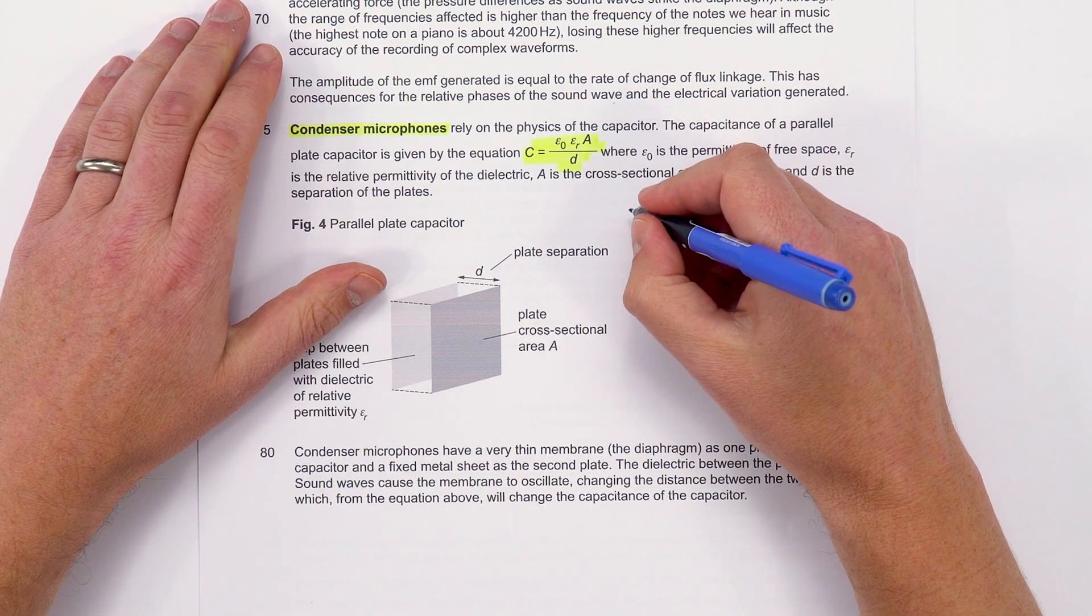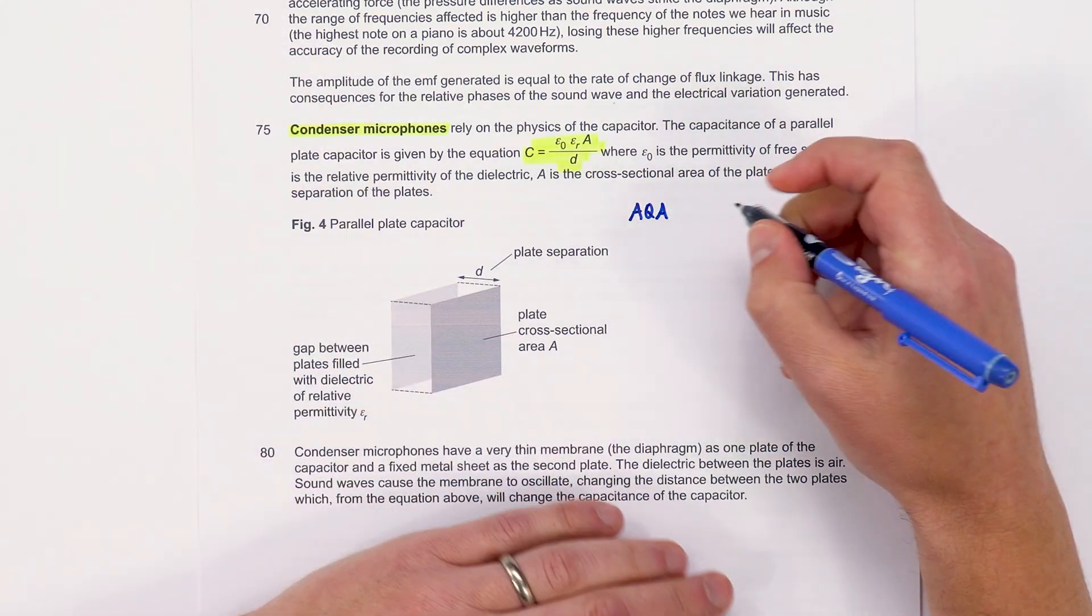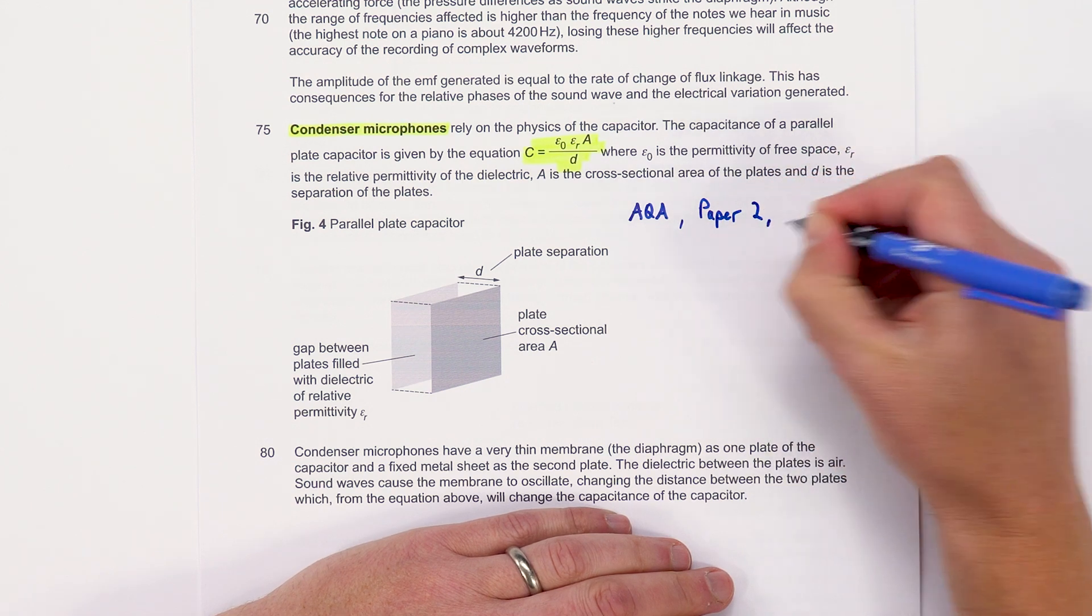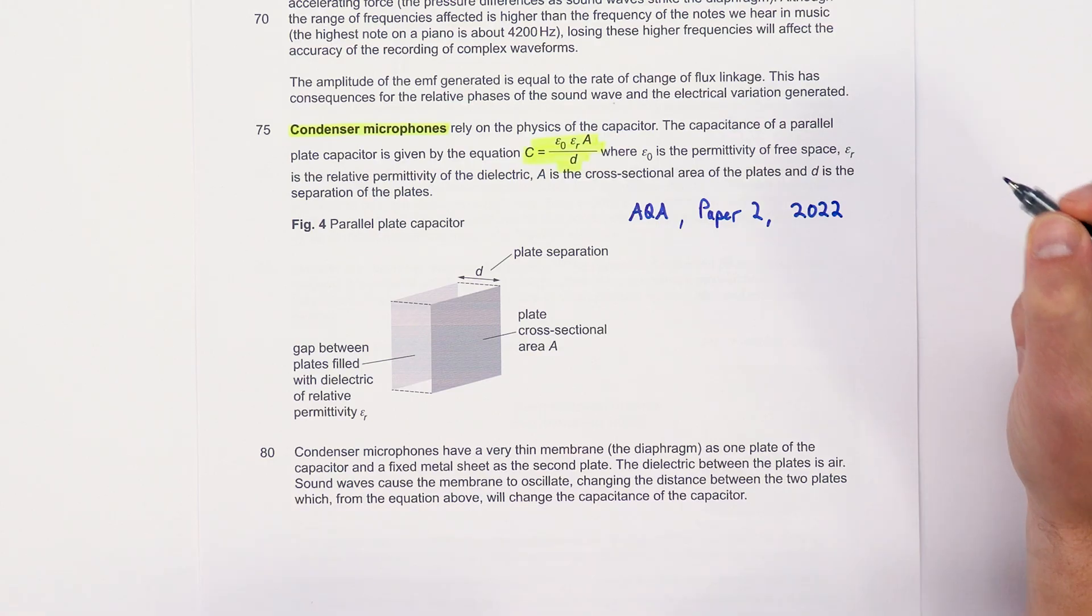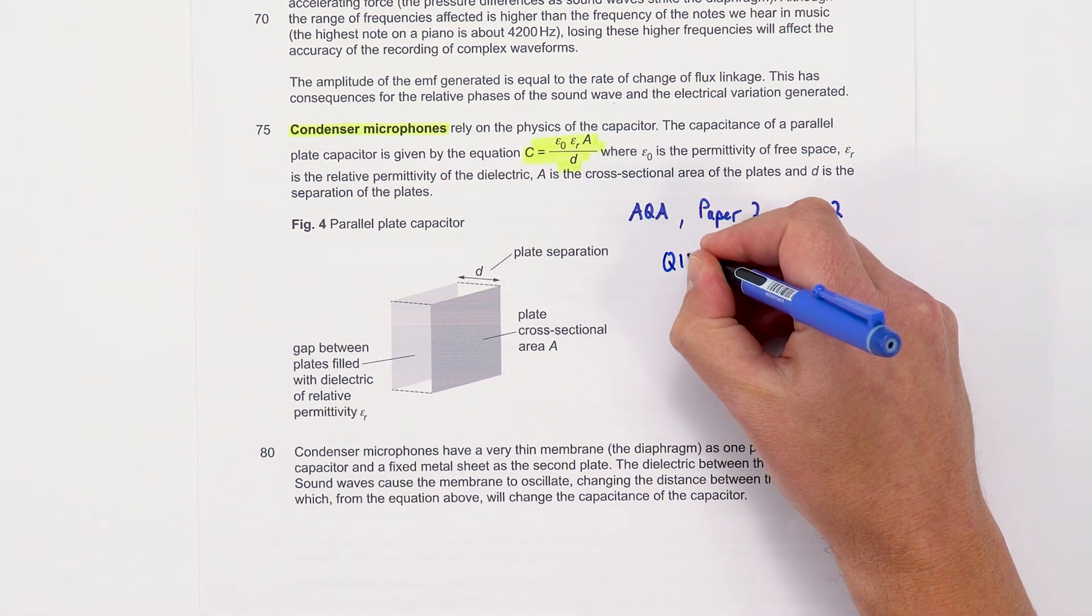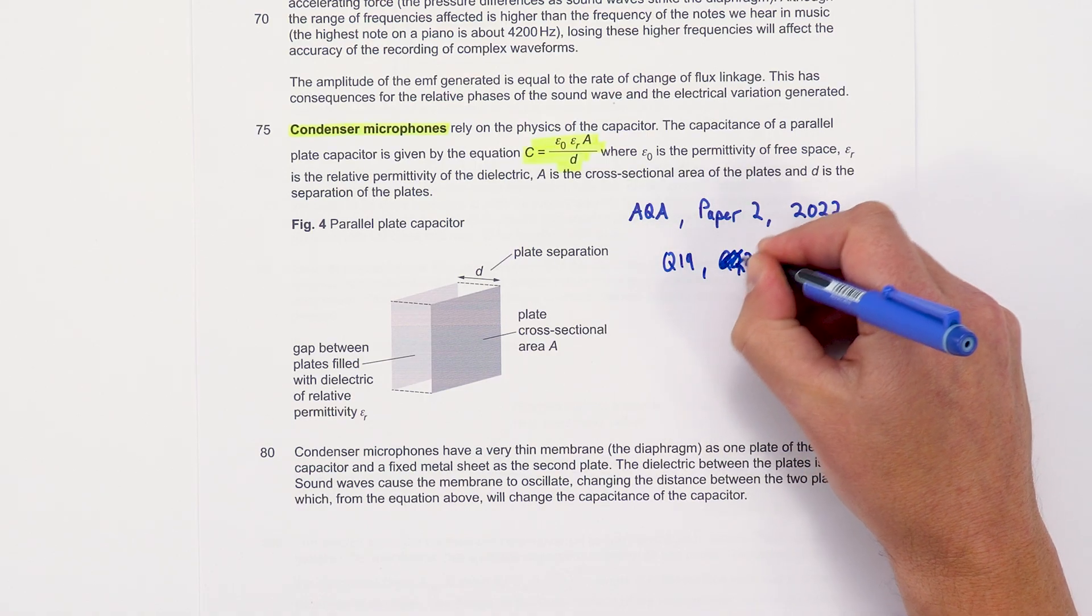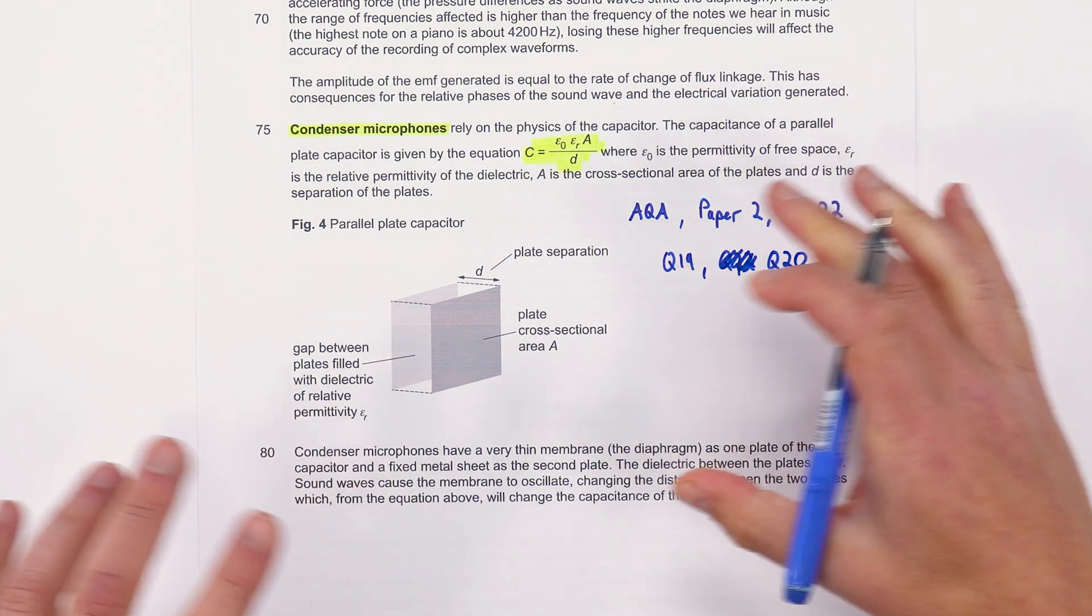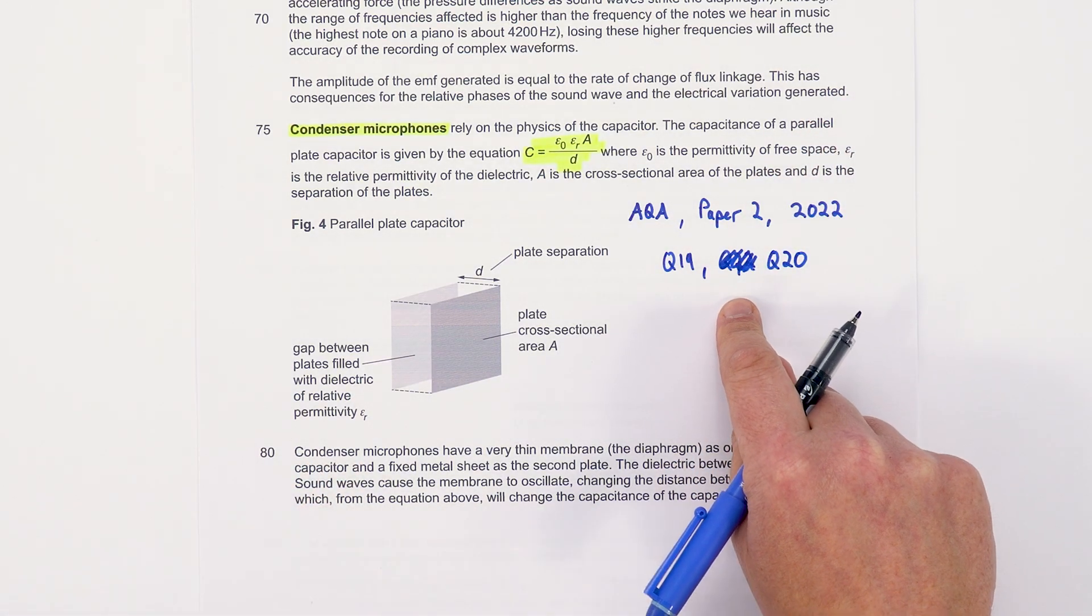For example, if you want to go to my past paper finder, if you look for the AQA paper and you look for paper 2 and you look for the 2022 paper, there are two multiple choice questions that use this—question 19 and question 20. I can't show them on YouTube because of copyright, but you can find my worked solutions to these.